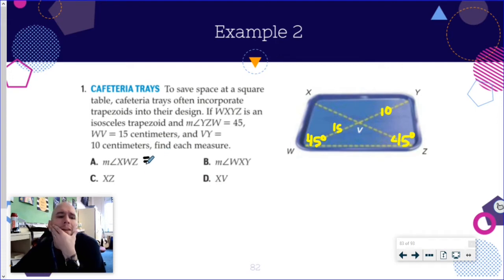When you have an isosceles trapezoid, which is what we have here, we have an isosceles trapezoid. The base angles are exactly the same. So that's what's going on here.